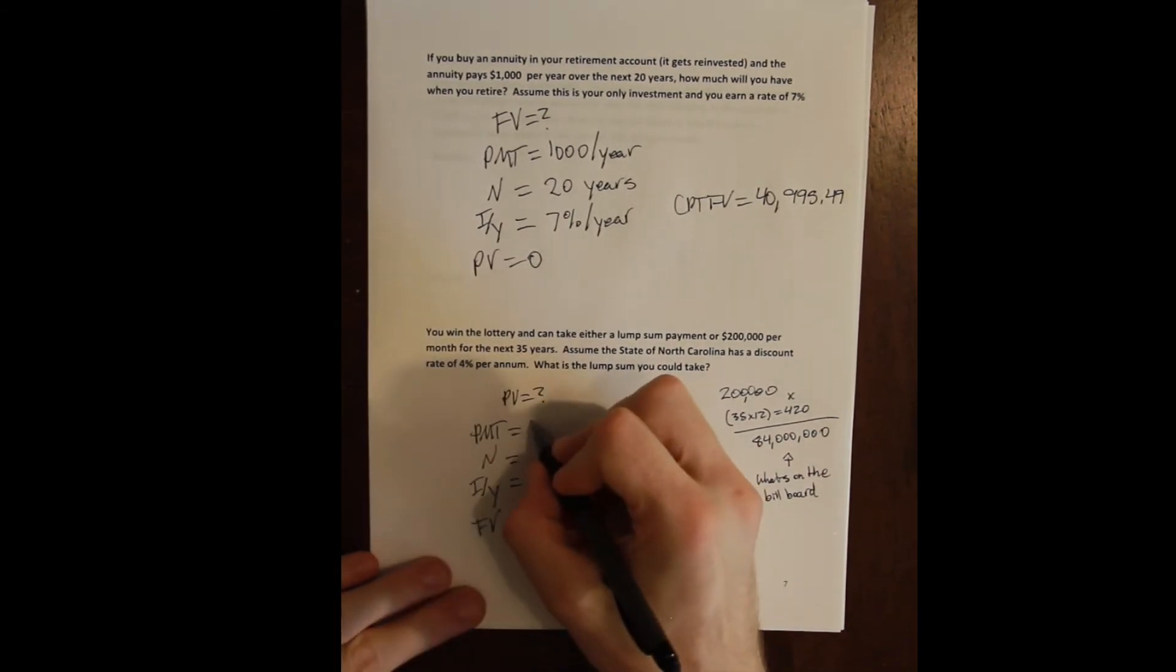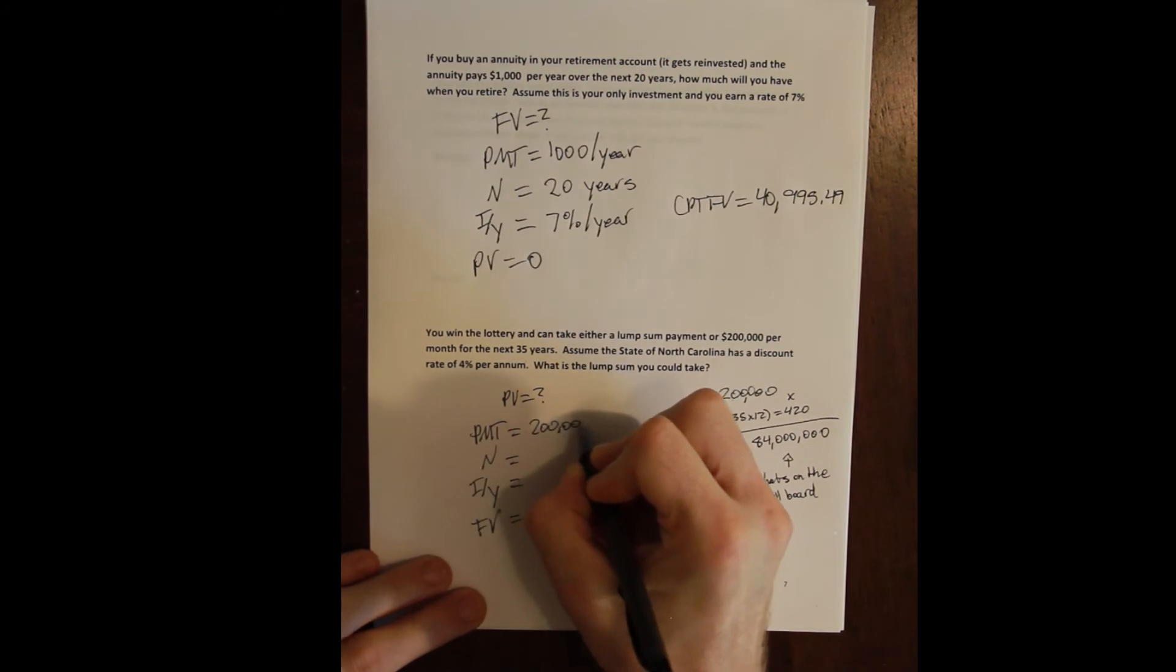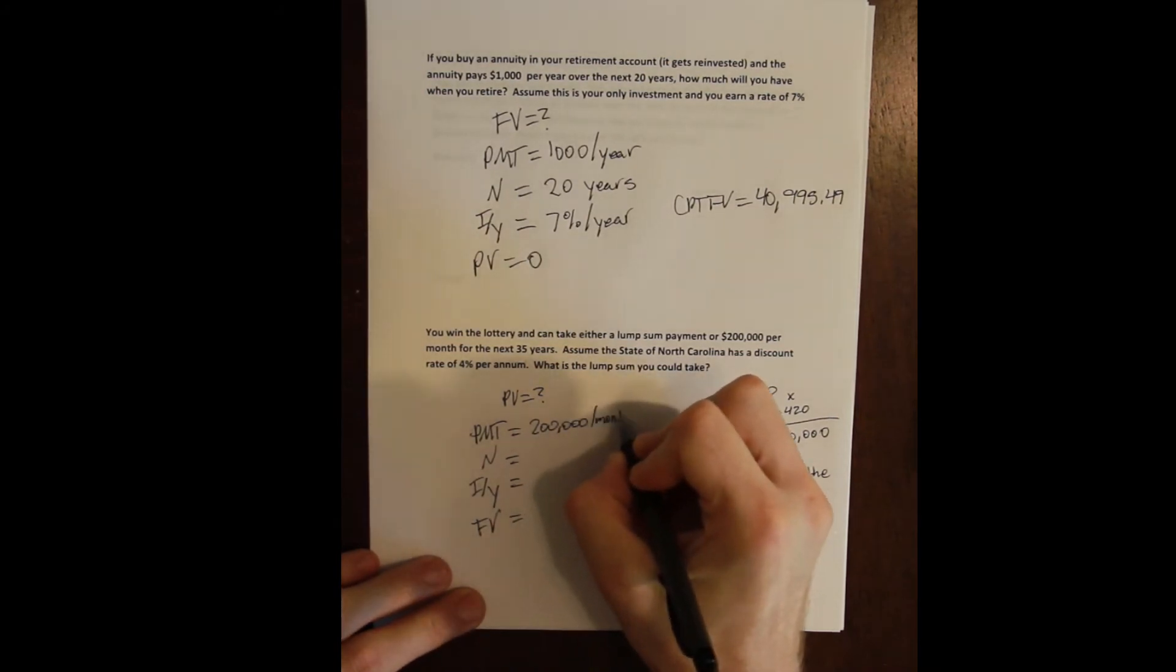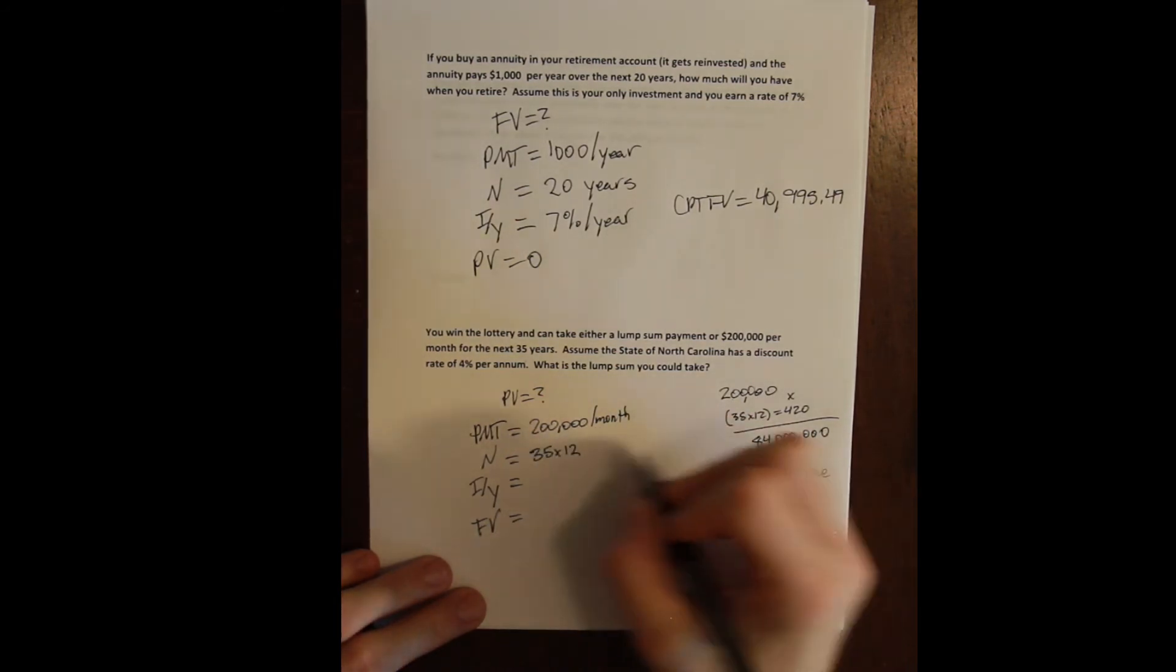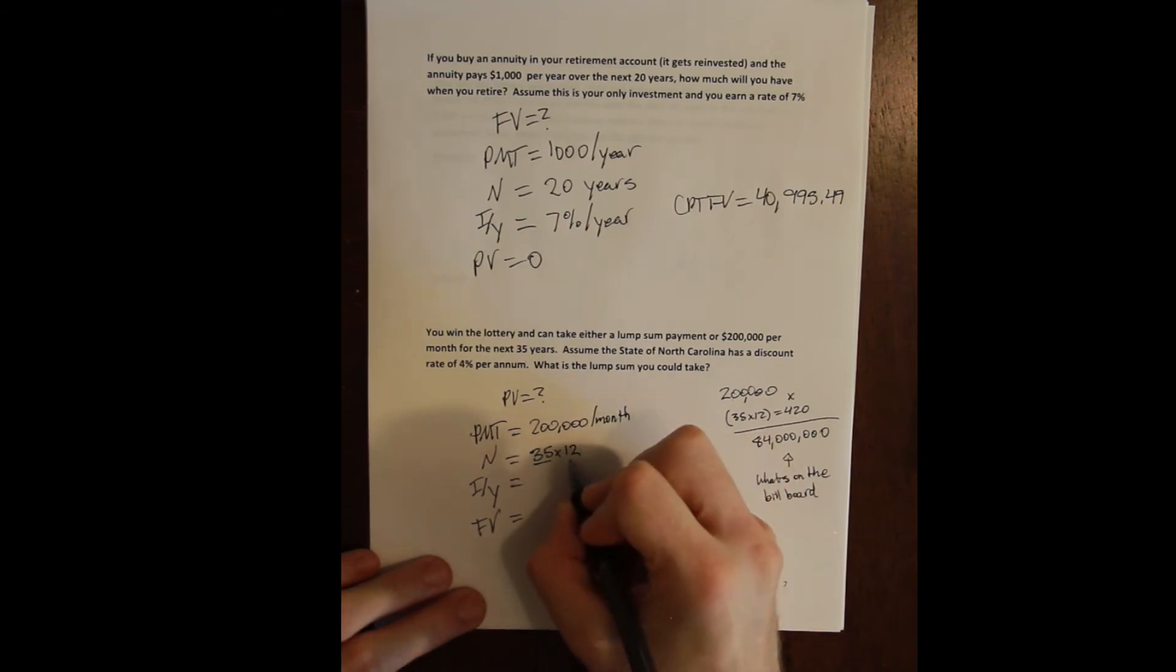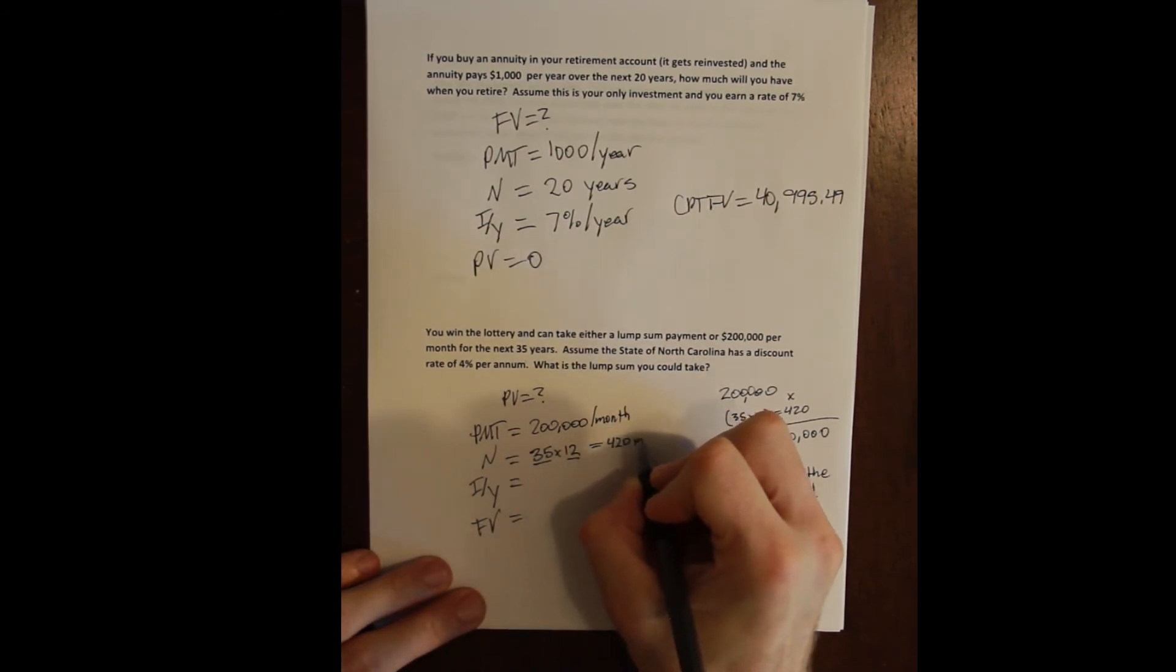Well, the payment of the annuity is right there in the problem, $200,000 per month. N is monthly, so we need the number of months that we would receive that annuity. 35 years times 12 months per year is 420 months.